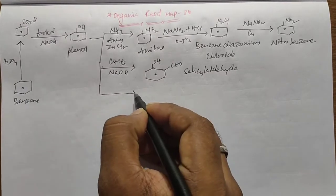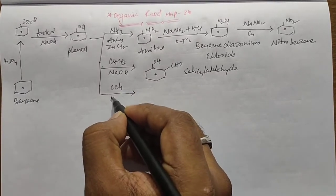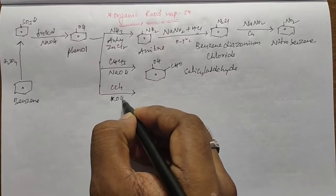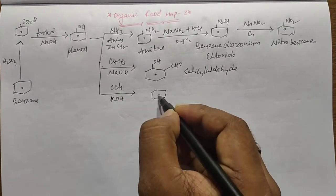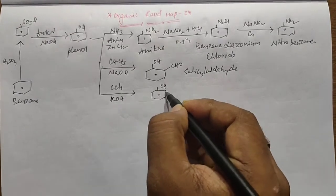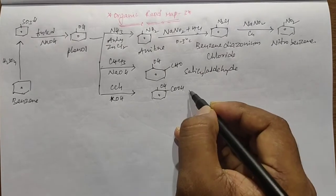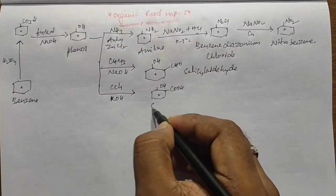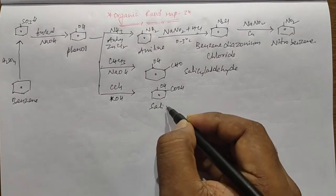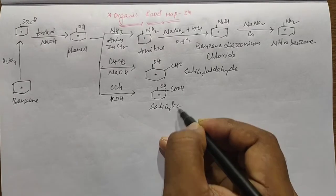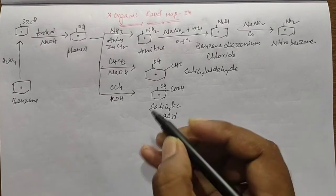When Phenol reacts with Carbon Tetrachloride in presence of Potassium Hydroxide solution, it can form Salicylic Acid.